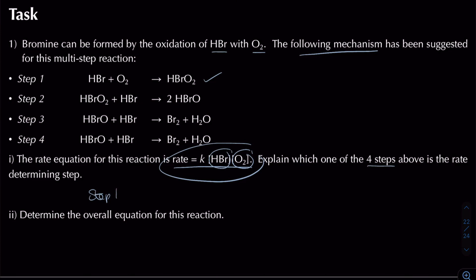To determine the overall equation: split the mechanism down the middle and cancel intermediates. HBrO₂ cancels, HBrO cancels (two lots on each side). Overall, what I end up with is four lots of HBr — counting one, two, three, four — reacting with one lot of O₂, and that makes two lots of bromine and two lots of H₂O.